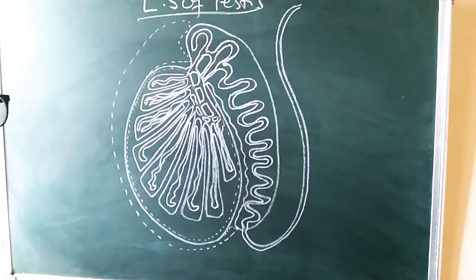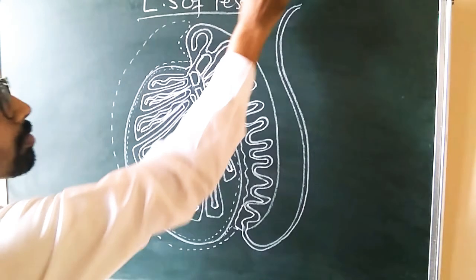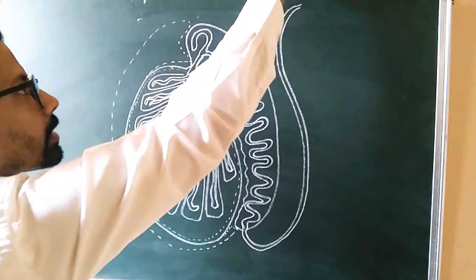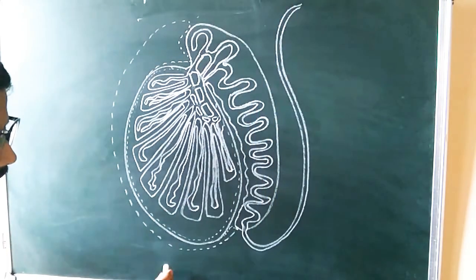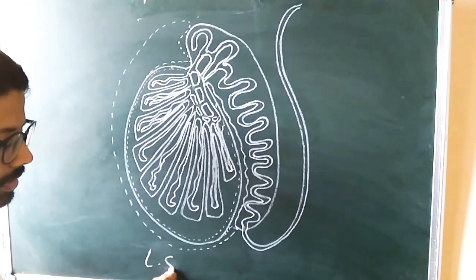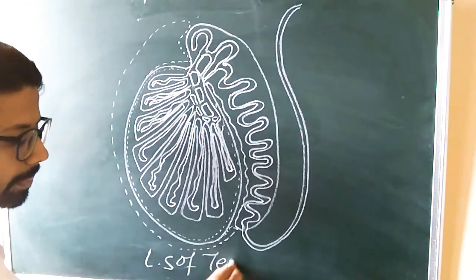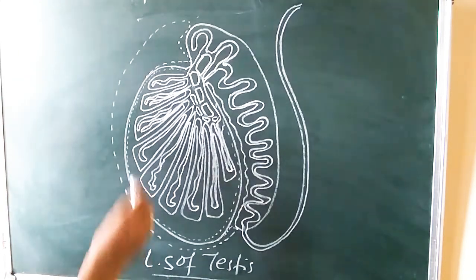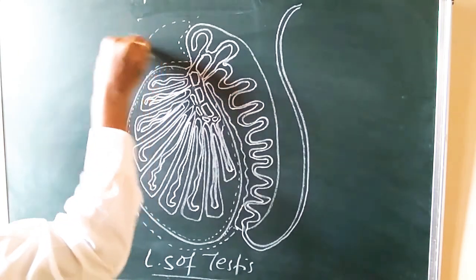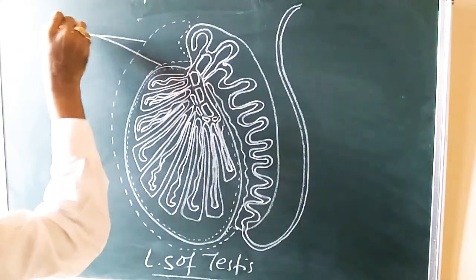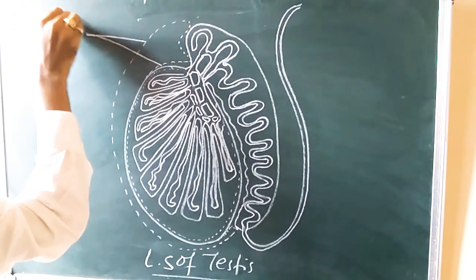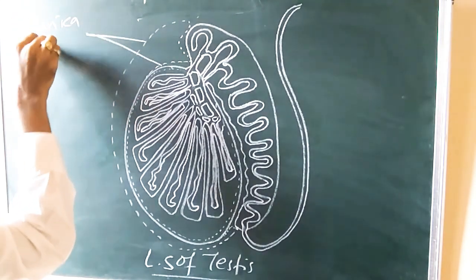You can label the diagram as 'LS of testis' as the heading. You can put it at the top, or if you can't see it there, you can write it at the bottom side as 'LS of testis.' These two regions we call tunica vaginalis.